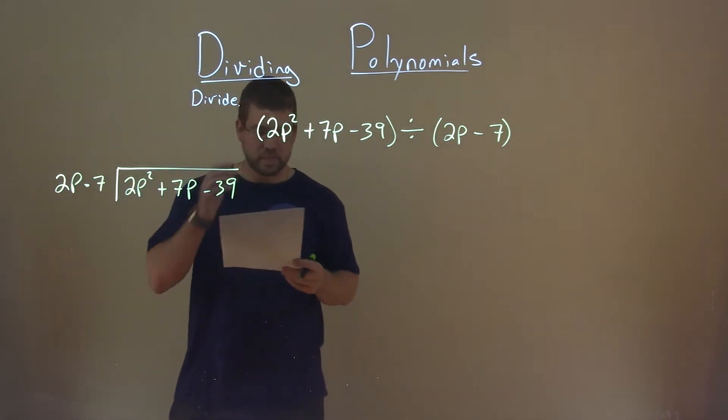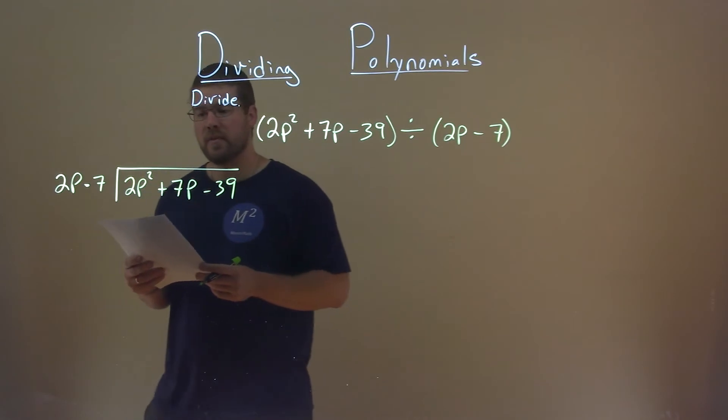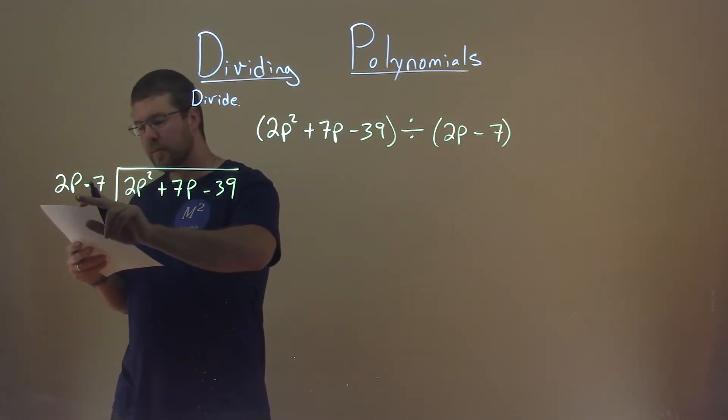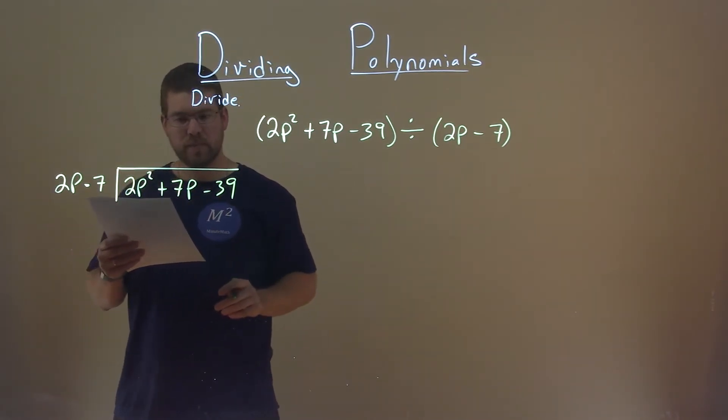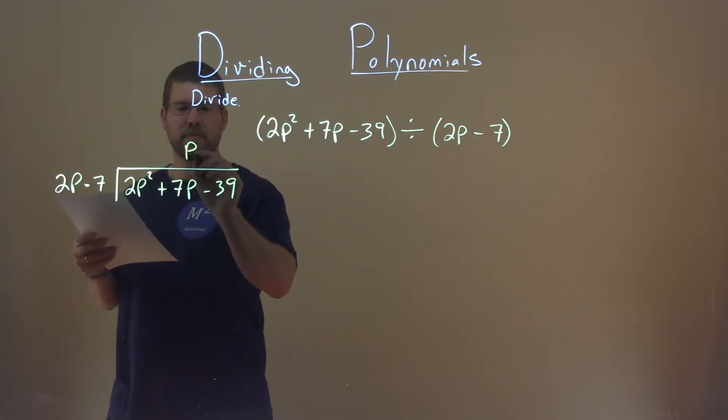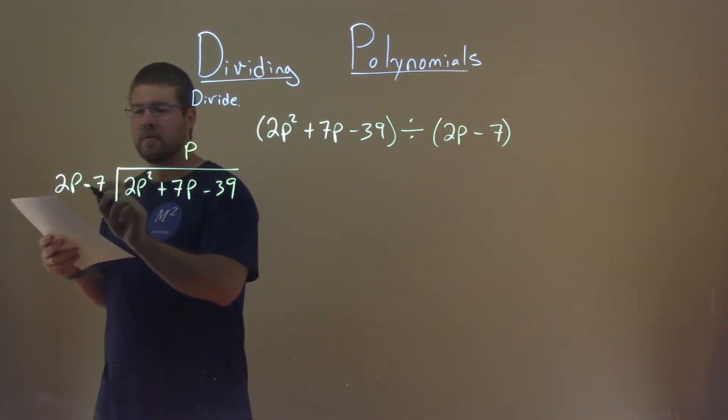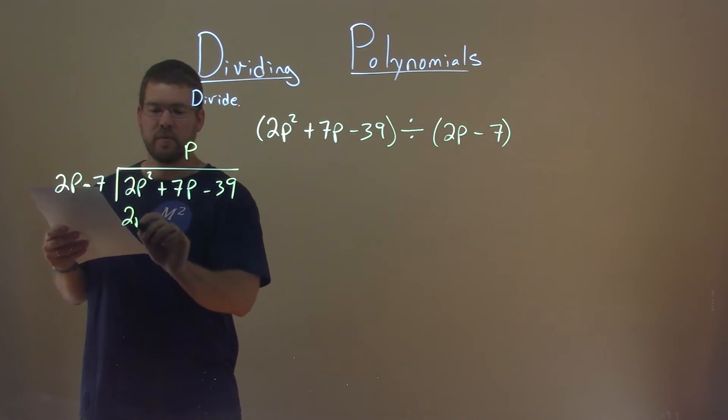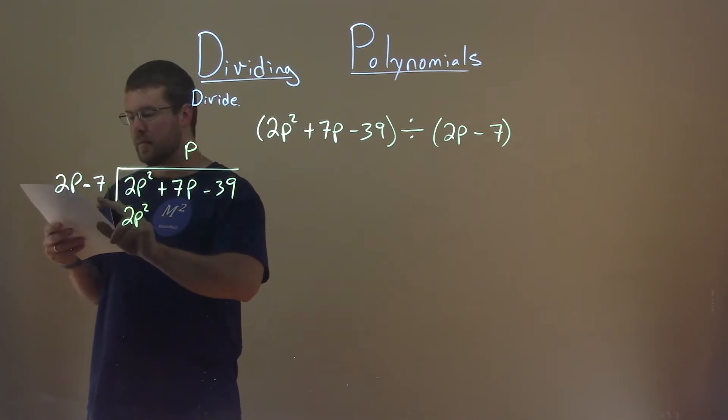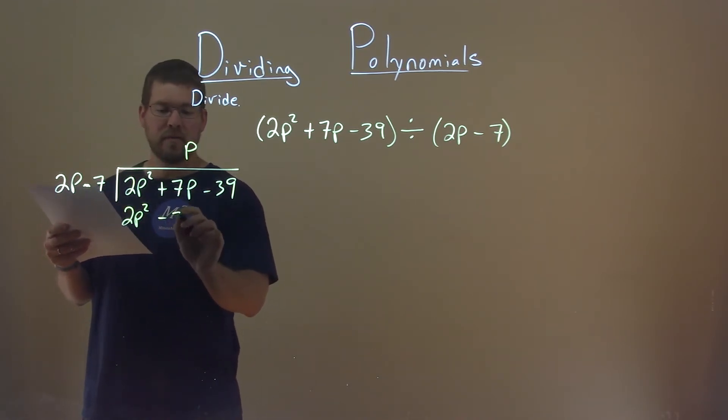Alright, so now we have to ask ourselves, what times 2p gets me 2p squared? And that's just a p. p times 2p, 2p squared. p times a minus 7 is a minus 7p.